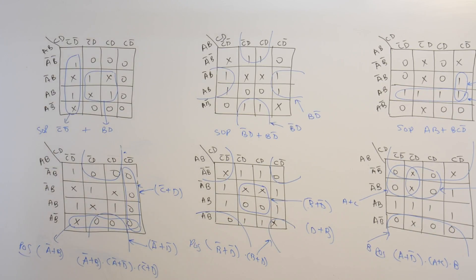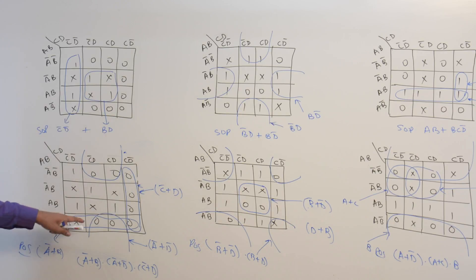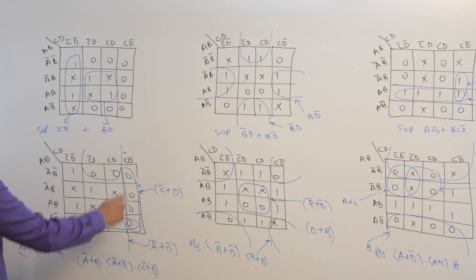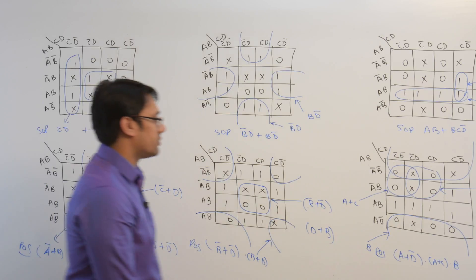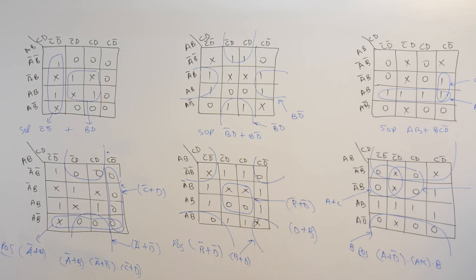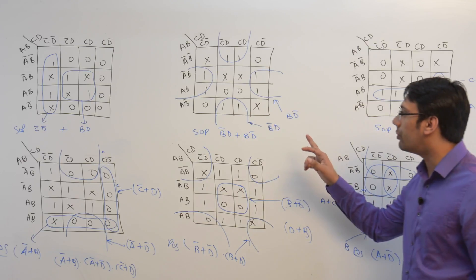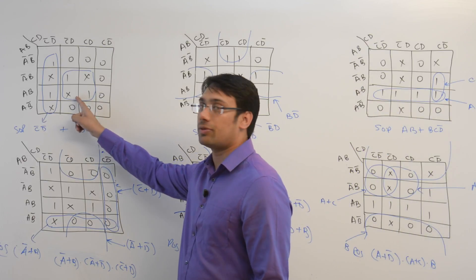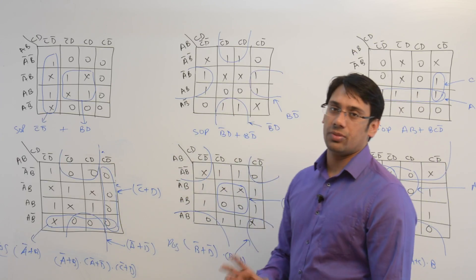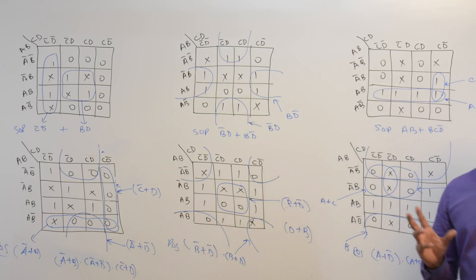So here we created three subcubes — this one, this one, and this one. We cannot make a subcube of size 8 in this case. We could also have made another subcube, but there is no benefit of making it because it will unnecessarily increase the number of minterms. We want to get the minimal or minimized expression. The don't care combination can be associated either with 1 or with 0 according to which gives the most minimized result.